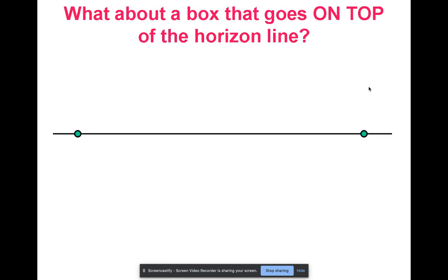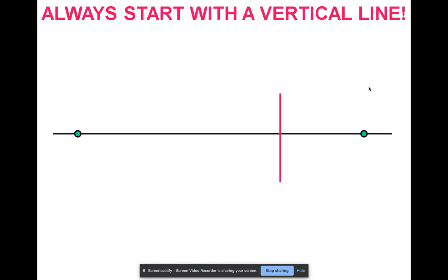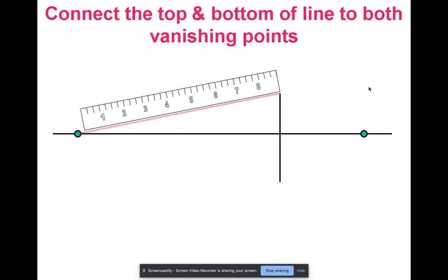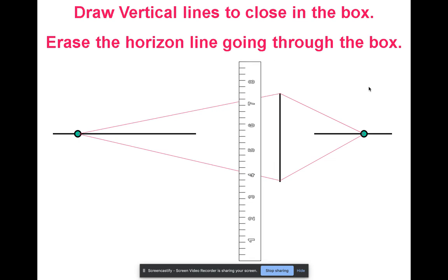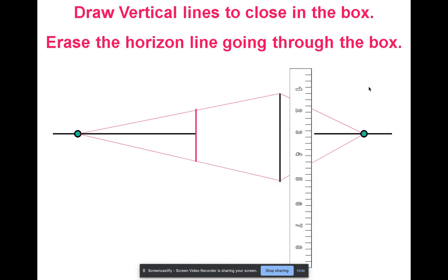Now what if we are doing a box that's directly on the horizon line? Again we start with a line. We take the top and the bottom of it and we go back to both vanishing points. You're going to decide how long you want your box to be. Keep your ruler parallel to that beginning line. Bring it back.